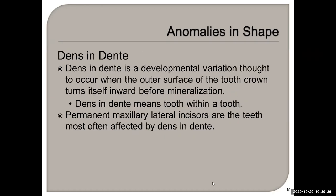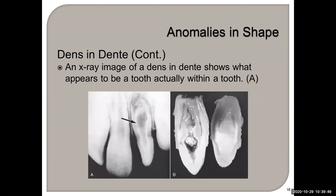Dens in dente — tooth within a tooth. The permanent maxillary lateral incisors are the most commonly affected by dens in dente. It's a developmental variation thought to occur when the outer surface of the crown engulfs itself. Dens in dente is most common on the maxillary lateral incisor and can be seen radiographically.